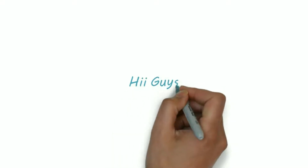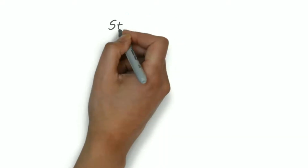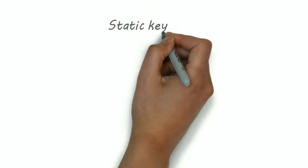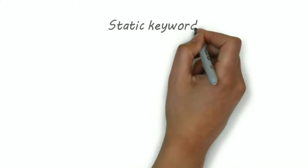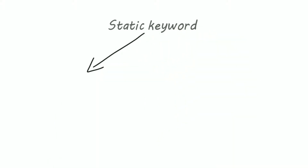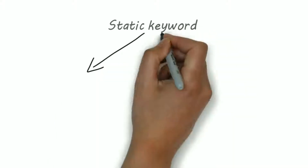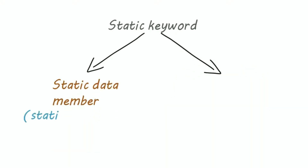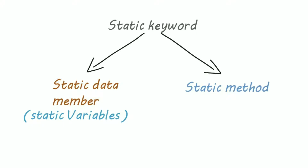Hi guys, we can use the static keyword with class variables, methods, and blocks. We will learn the concept of static class and static blocks in upcoming videos. In this video we will learn about static variables and static methods.